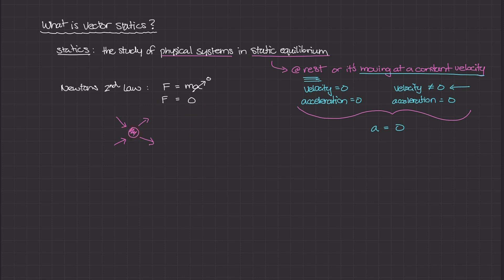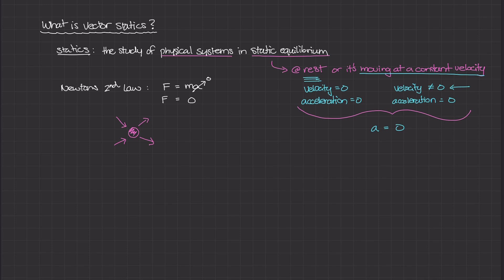You might be thinking: if an object is in static equilibrium with all these forces acting in different directions — some pushing, some pulling — aren't those directions important? Don't we need to study which way those forces are oriented and how they're exerted onto the object? The answer is yes, and that's where we get into the vector part of this definition.